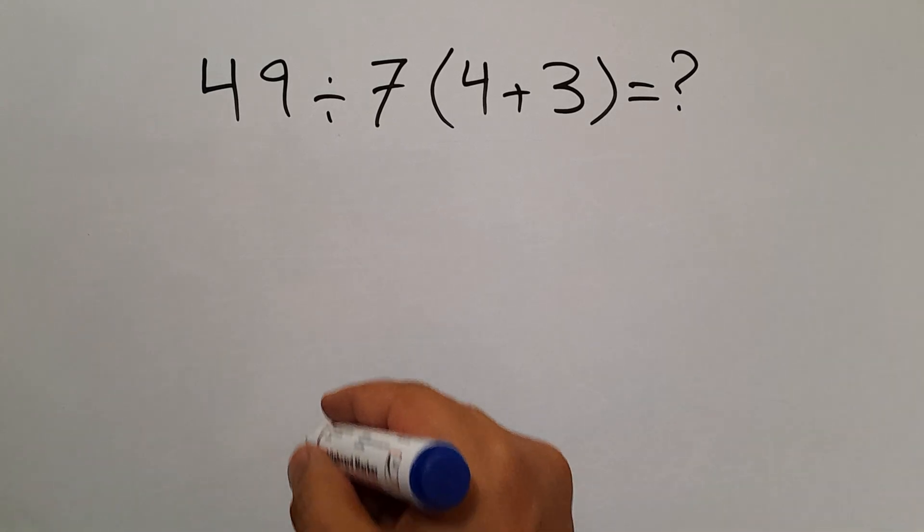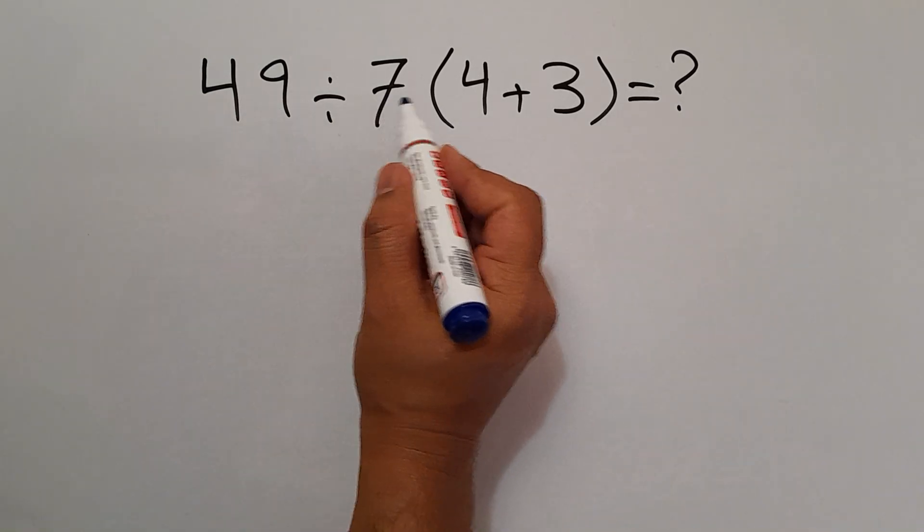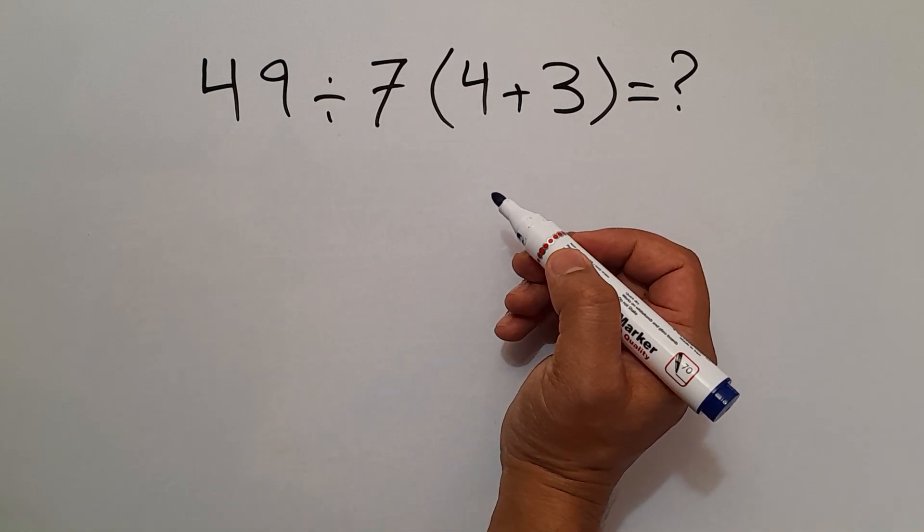Hey guys and welcome to this video. In this video we want to find the value of this expression: 49 divided by 7 times 4 plus 3. Are you ready to solve? Let's go ahead and get started.